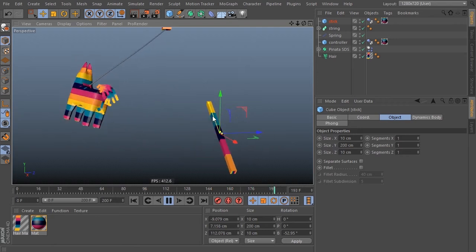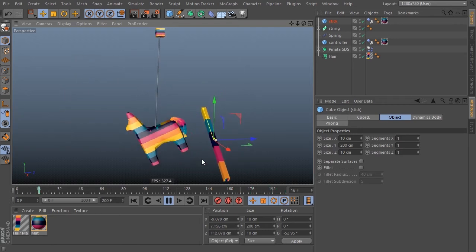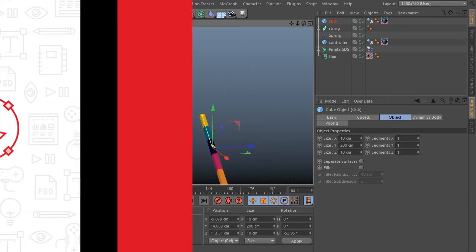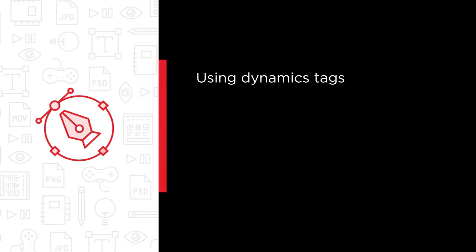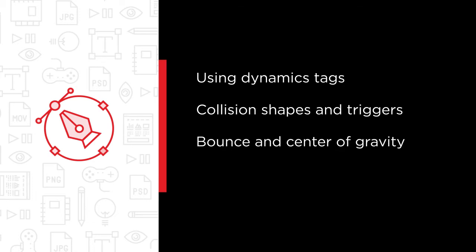This course is an overview of Cinema 4D's Rigidbody Dynamics system. Some of the major topics that we will cover include using Dynamics tags, specifically the Rigidbody and Colliderbody tags. We'll look under the hood at parameters like collision shapes and triggers that control when and where dynamics occur, as well as parameters affecting Dynamics personality such as bounce and center of gravity.